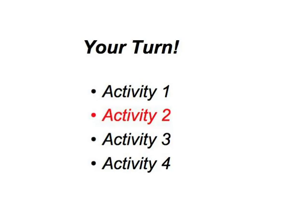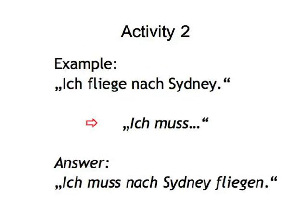Activity 2. In this activity, we give you a short sentence like Ich fliege nach Sydney, and a modal verb form like Ich muss. You now have to build the modal verb into the sentence, which in this case would result in the answer Ich muss nach Sydney fliegen. Let's start.